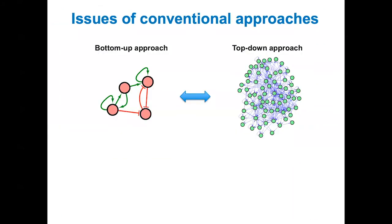As you can see, we're aiming to combine bottom-up and top-down approaches in systems biology. The key is a robust and powerful mathematical modeling method.